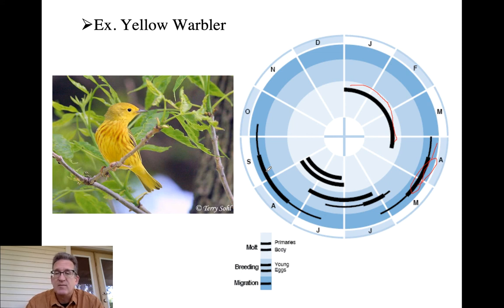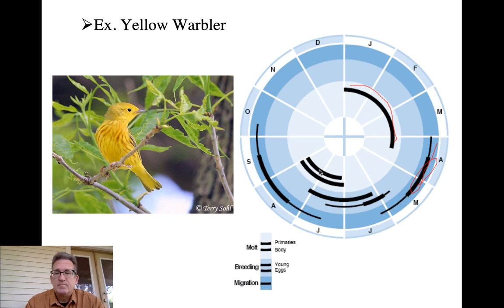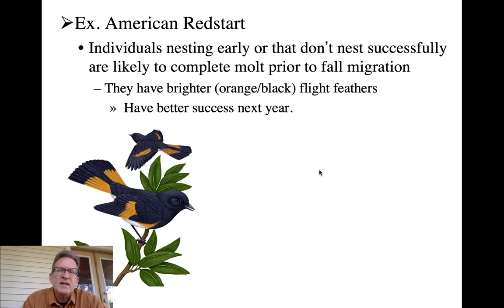Being late in migration or re-nesting has important consequences for future reproductive success and survival. The complete pre-basic molt is more energetically expensive because you're molting not only body feathers but also the remiges and rectrices — the flight feathers.